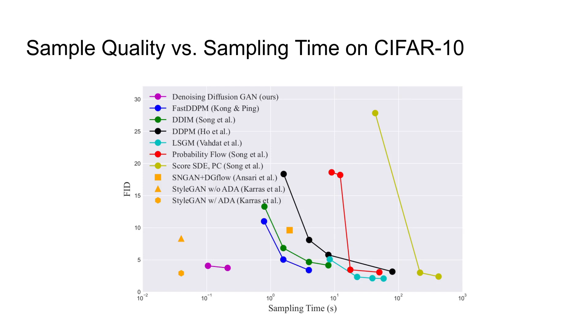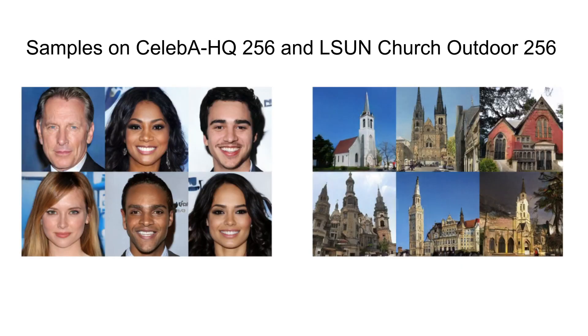Here are some samples from the denoising diffusion GAN on high resolution data sets. The results are almost indistinguishable from real photos.